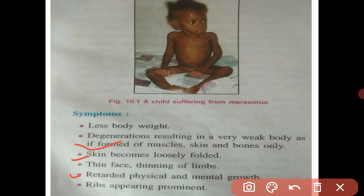Marasmus is the disease which affects infants up to one year of age. It is due to the deficiency of carbohydrates, proteins, and fat in the diet. There is no edema in Marasmus — unlike Kwashiorkor which has edema (swelling on the face and legs), in Marasmus there is no swelling and no water present in the skin. To treat a child suffering from Marasmus, we should give a diet rich in protein and carbohydrates.